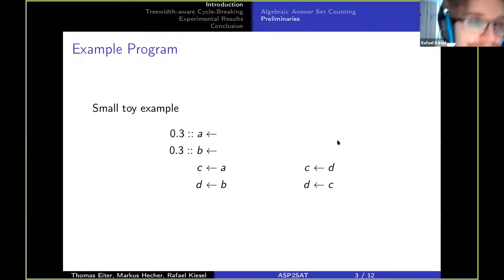Let's look at an example of what I'm talking about. Here we have some probabilistic program where a is true with probability 0.3 and the same holds for b. Furthermore, if we have a then we derive c, and if we have b then we derive d, and if we have either d or c then we also derive the other one. So we have this program, how do we translate it into CNFs?